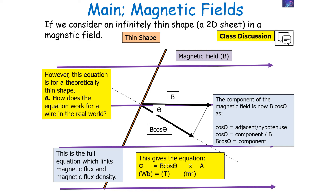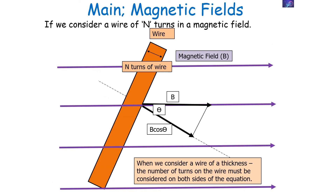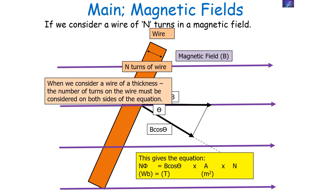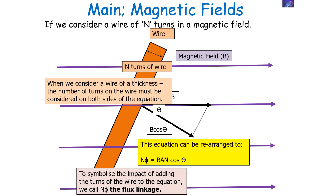However, this equation is for a theoretically thin shape. How does the equation work for a wire in the real world? Let's now consider a wire of N turns in a magnetic field. When we consider a wire of a thickness, the number of turns on the wire has to be considered on both sides of the equation, as N — the number of turns — is basically our thickness factor. So now we can say NΦ = BA cos θ × N, giving us the equation NΦ = BAN cos θ. To symbolize the impact of adding the number of turns of wire, we call NΦ another quantity called the flux linkage.